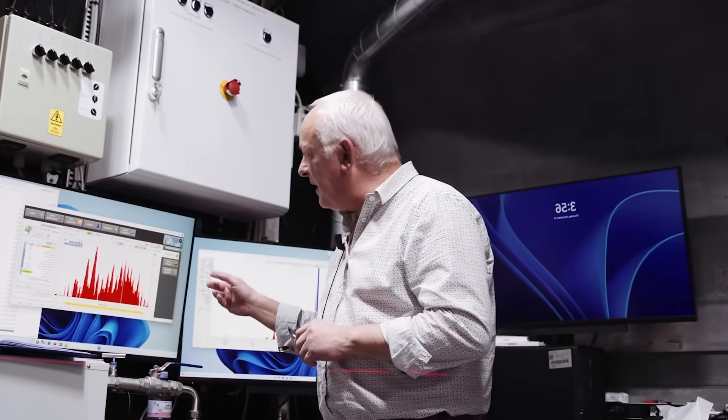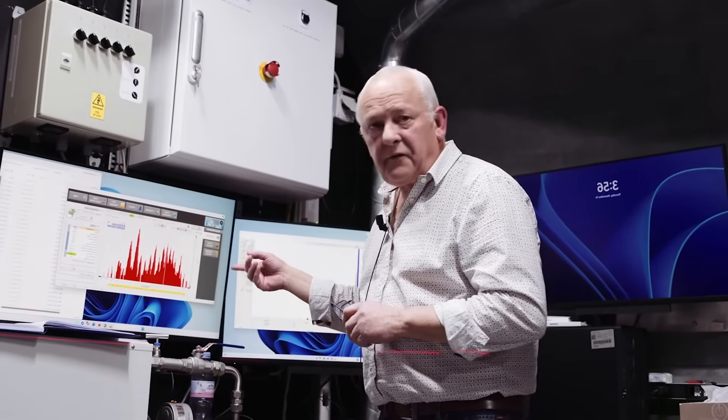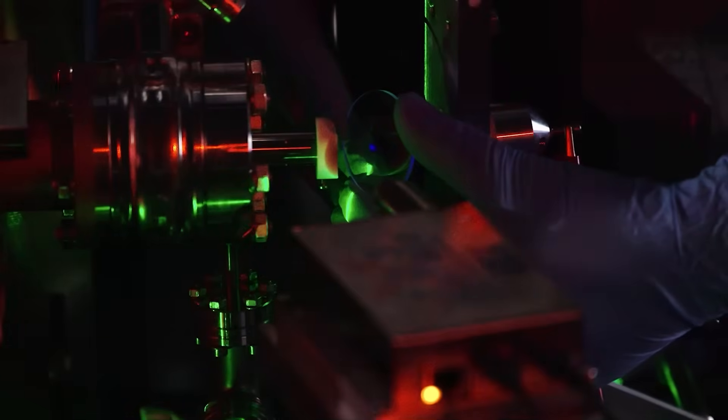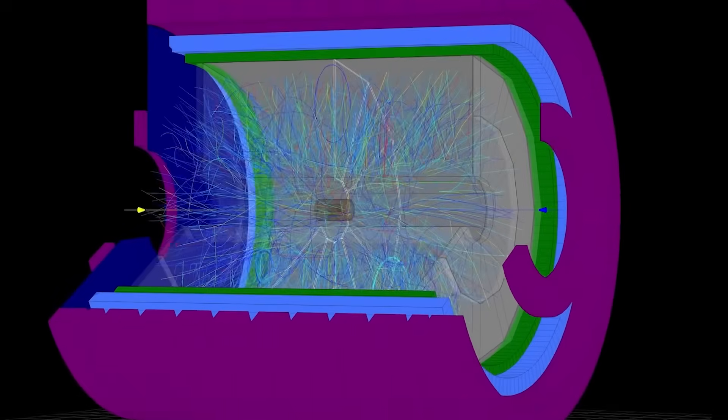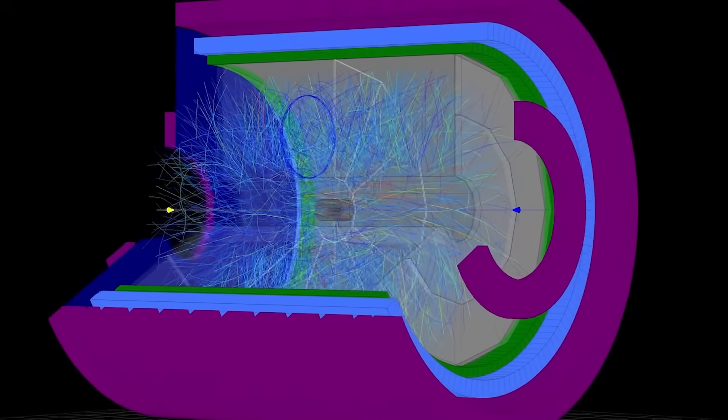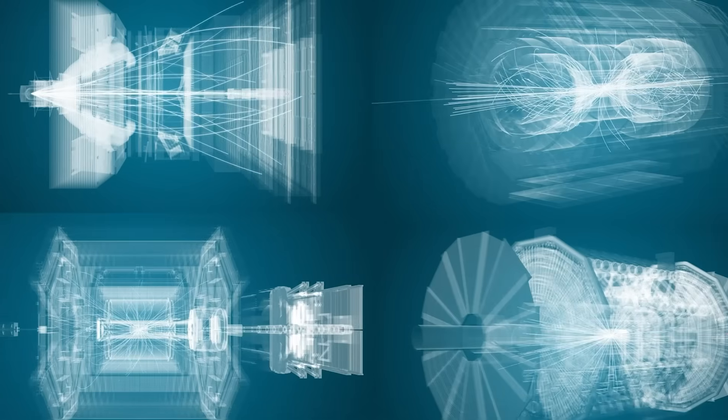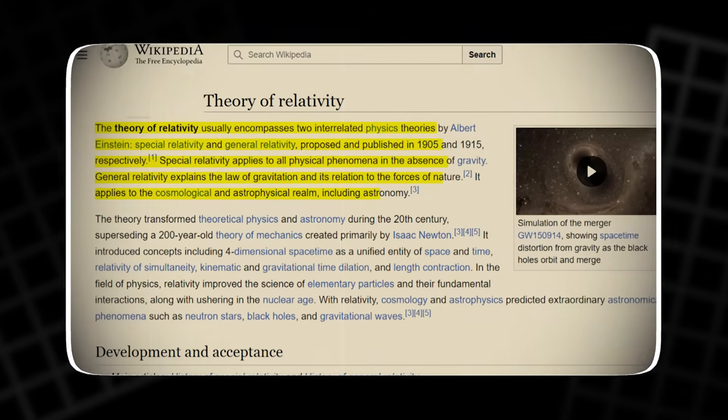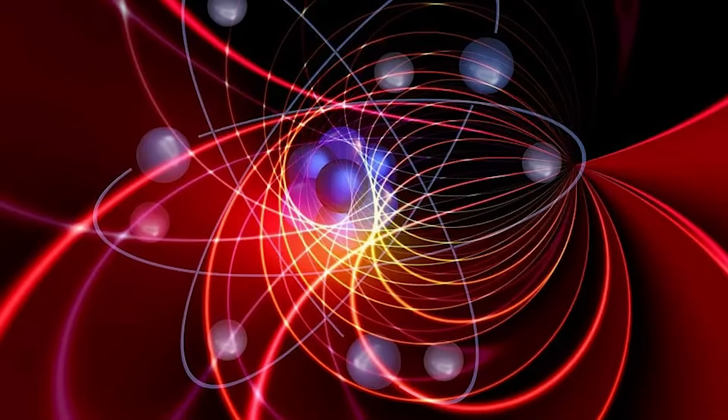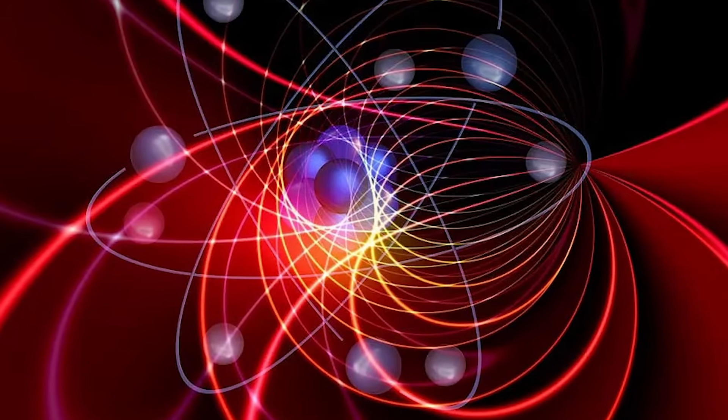In 2011, CERN sent a shockwave through the physics community when it announced results that seemed to suggest neutrinos, those ghost-like particles that pass nearly undetected through matter, were travelling faster than light. If true, this would have shattered Albert Einstein's theory of relativity and demanded a full rewrite of modern physics.